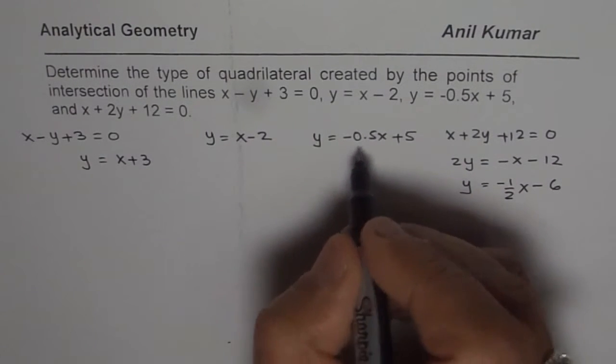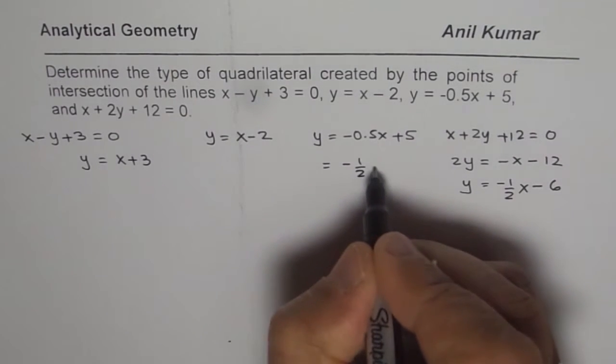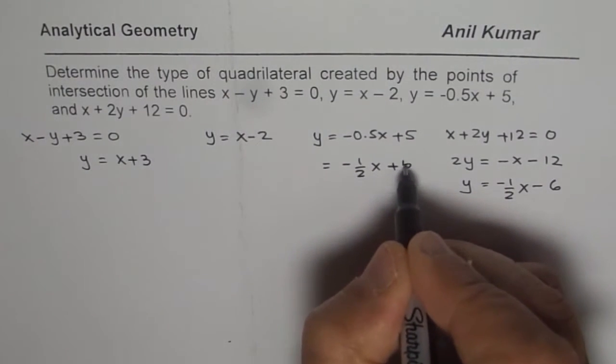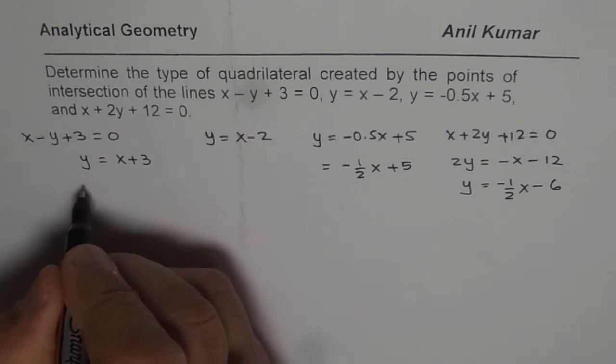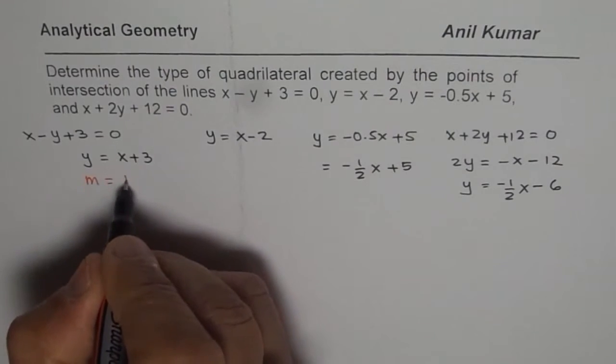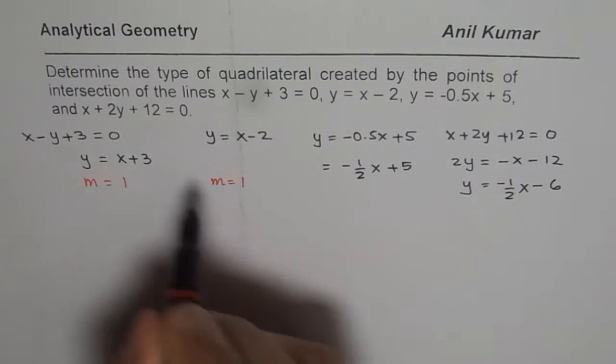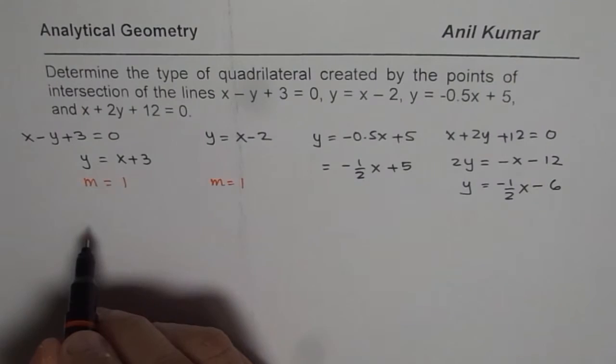You can write this in fraction form also, minus half x plus 5. Now, when you have these four lines, what do you observe? The slope of this line is m equals 1, here slope equals 1, that means these two lines are parallel lines, correct?